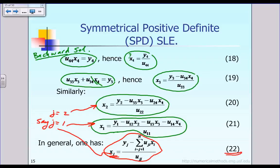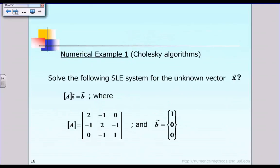So to go through the three steps: the first step is the factorization phase to find matrix U; the second step is the forward solution phase to find the intermediate vector y; and the third and last step is the backward solution phase to find the original unknown vector x. Let me give you a numerical example to demonstrate the idea.